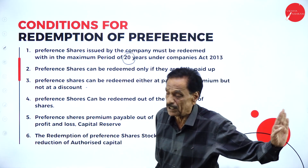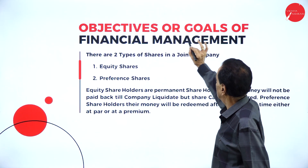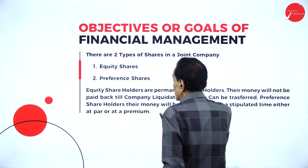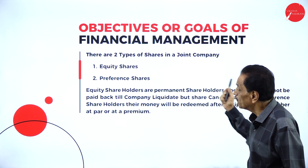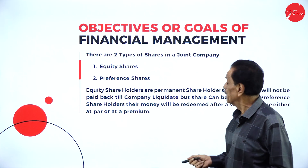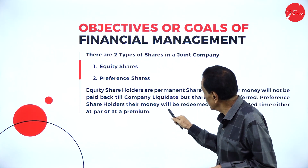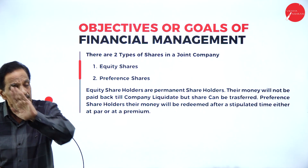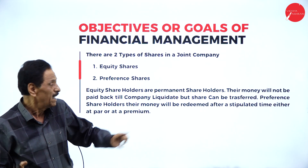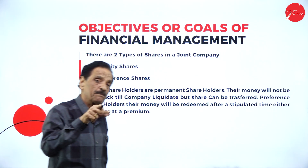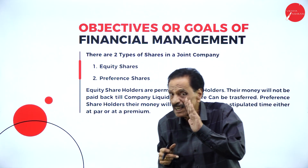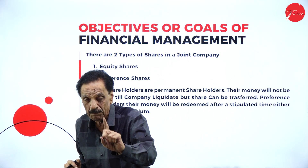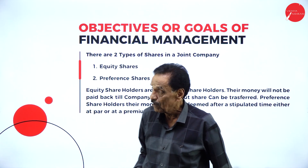There are two types of shares in a company: equity shares and preference shares. Equity shareholders are permanent shareholders — their money will not be paid back until the company liquidates, but their shares can be transferred. Preference shareholders' money will be paid back after the stipulated time, either at par or at a premium, but not at a discount.